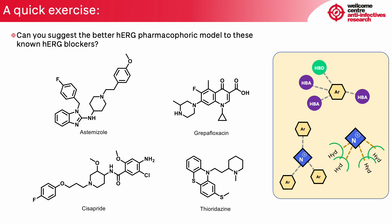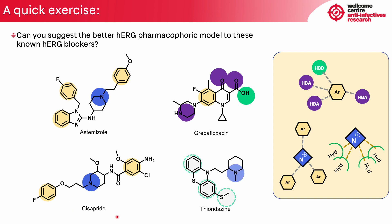Were you able to come up with an answer? Let us go molecule by molecule. Astemizole fits the model with a basic center — the nitrogen — surrounded by aromatic rings. Grepafloxacin fits the model with an aromatic ring surrounded by hydrogen bond acceptors and a donor. Cisapride also fits the model with a basic center with aromatic rings surrounding it — there are only two rings rather than three, but it fits the model quite well. And thioridazine fits the model with a basic group surrounded by hydrophobic moieties.